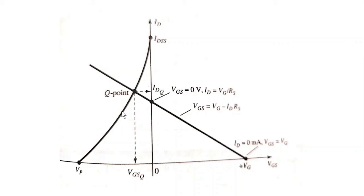Again we plot the transfer characteristic curve, which is the device characteristic curve. When we plot both the network curve and the transfer characteristic curve, they intersect at a common point. This common point is called the quiescent point, or Q-point, or operating point, and from it we obtain the values Id_Q and Vgs_Q.